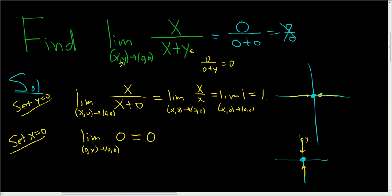So when we set y equal to 0, when we approach along the x-axis, we get 1. And when we set x equal to 0, when we approach (0,0) along the y-axis, we get 0.